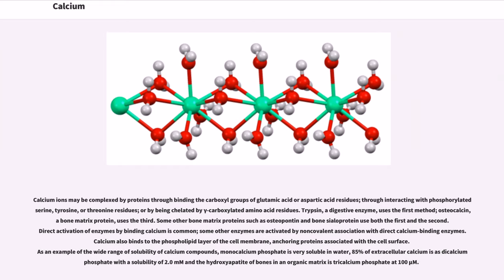As an example of the wide range of solubility of calcium compounds, monocalcium phosphate is very soluble in water, 85% of extracellular calcium is as dicalcium phosphate with a solubility of 2.0 mM, and the hydroxyapatite of bones in an organic matrix is tricalcium phosphate at 100 µM.